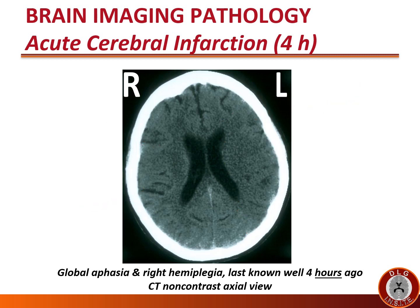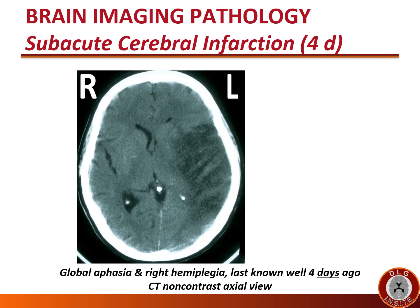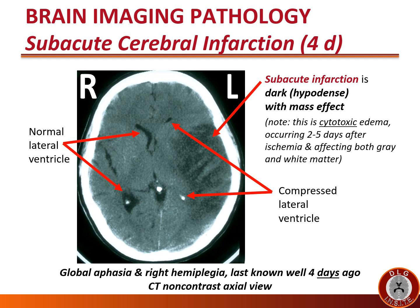Four days after last known well in the same patient, the subacute infarction is more easily detected on CT. The subacute infarction is dark or hypodense with mass effect. Note the compressed lateral ventricle on the left. This darkness and mass effect is due to cytotoxic edema — the cells die and rupture in the infarction — occurring days two to five after ischemia and affecting both gray matter and white matter. The unaffected right side still has normal lateral ventricles.